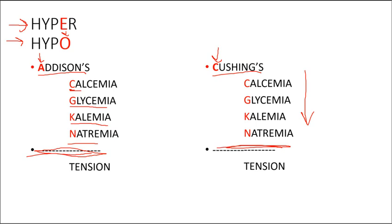And the best way to go about it is to go with hyper first. So with Addison's, we're going to go with hyper first. So you're going to see hypercalcemia.